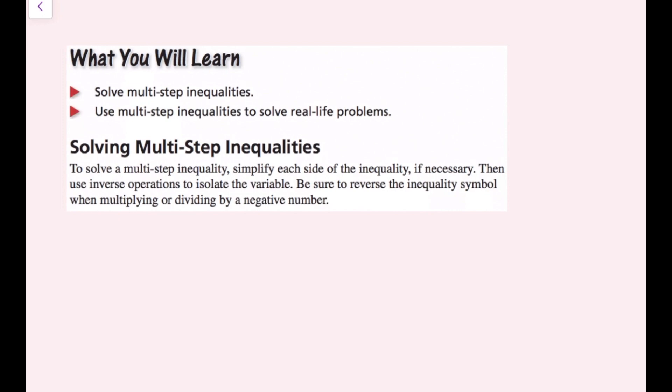To solve multi-step inequalities, simplify each side of the inequality if necessary. That means combine all like terms, evaluate any operations that you need to, and simplify any parentheses using the distributive property. Then use inverse operations to isolate the variable. Be sure to reverse the inequality symbol when multiplying or dividing by a negative number.